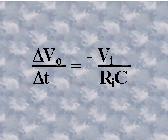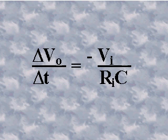Since the input current I-sub-I, which is the current through resistor R-sub-I, is constant, so is I-sub-C, the current through the capacitor. This constant current I-sub-C charges the capacitor linearly and produces a linear voltage across it. The positive side of the capacitor is held at zero volts by the virtual ground of the op-amp. The voltage on the negative side of the capacitor decreases linearly from zero as the capacitor charges. This voltage is termed a negative ramp.